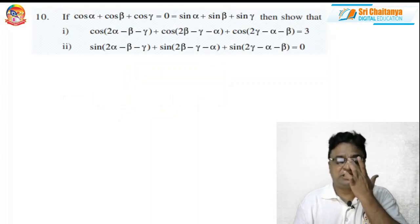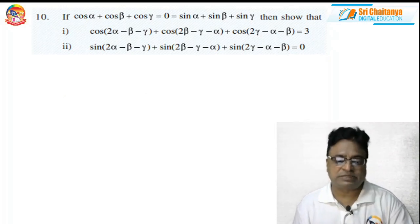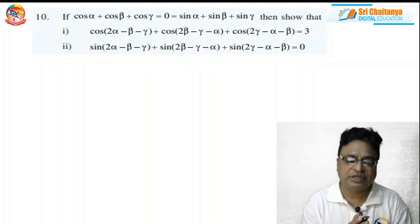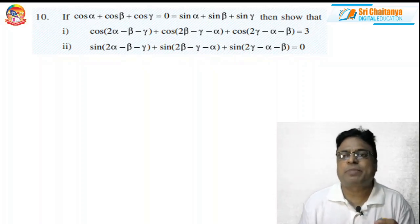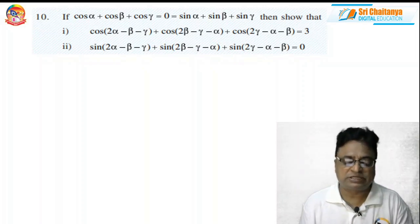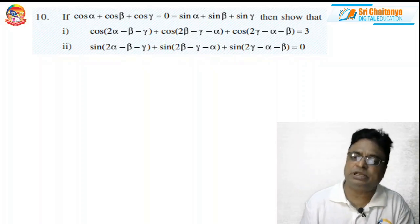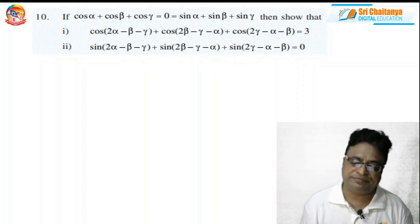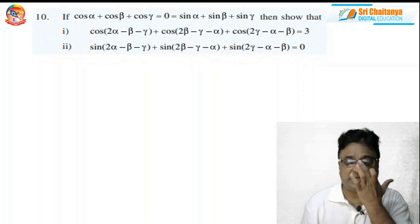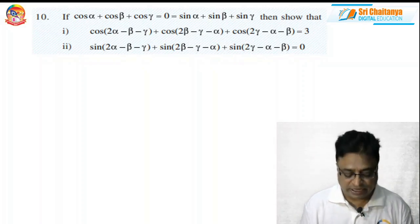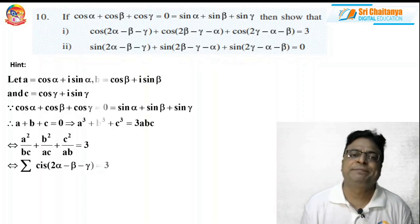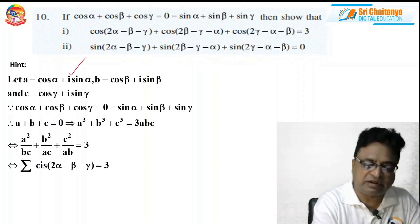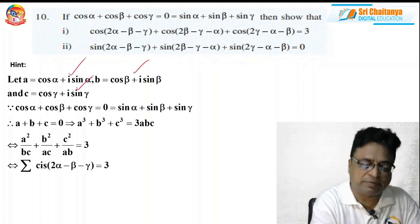This is the question: If cos α + cos β + cos γ = 0 and sin α + sin β + sin γ = 0, you have to show a result. Actually, if you are applying the transformations using trigonometry and compound angles only, getting the proofs becomes very difficult. Try to understand the idea behind the concepts. Here is the hint: let A = cos α + i·sin α, B = cos β + i·sin β, C = cos γ + i·sin γ.